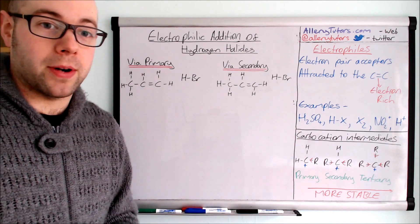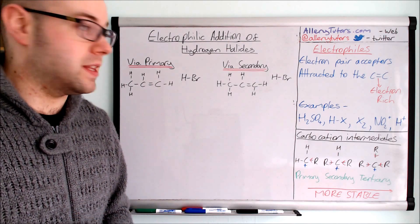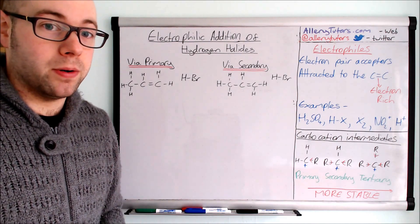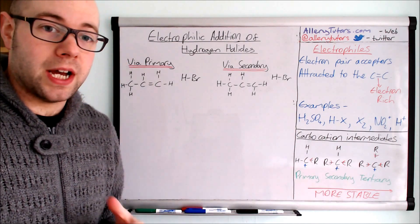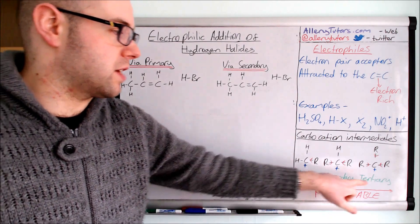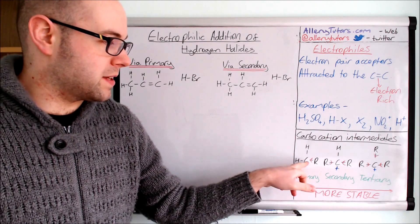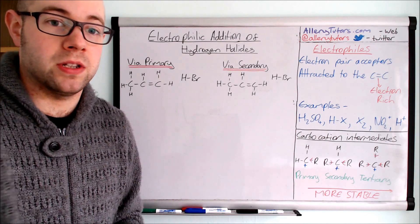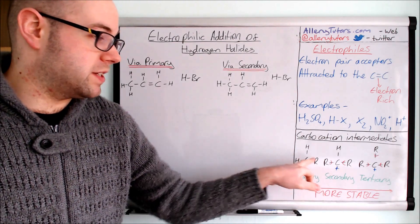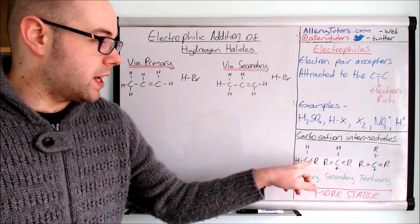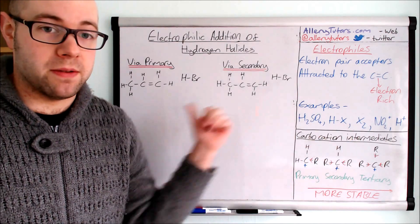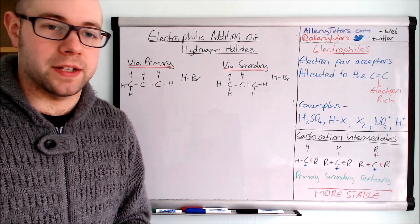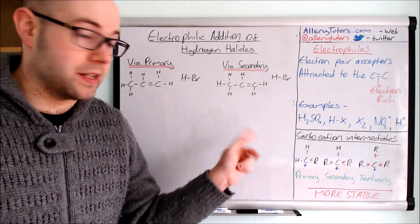I want to talk about carbocations first. Carbocations are the intermediates that we're going to form when we're coming up with these mechanisms, and they're really important because we have different types of carbocations. We have primary carbocations, secondary, and tertiary. I've drawn them as a carbon in the middle with R groups representing alkyl groups — that could be a methyl or a long hydrocarbon chain. A primary carbocation has one alkyl group attached to it and this isn't very stable.